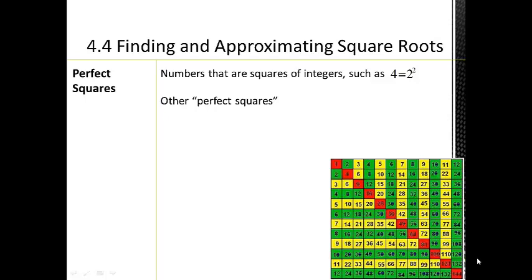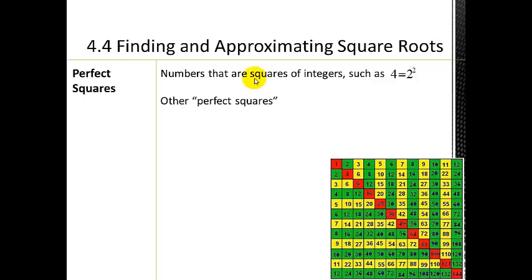Today we're going to talk about finding and approximating square roots. The first thing I want to talk about is what we call perfect squares. A perfect square is kind of what you'd think — a square has the same side lengths, so a perfect square consists of numbers that are squares of integers, meaning the side lengths are all integers.